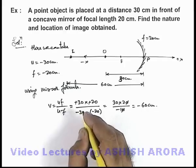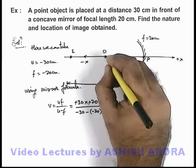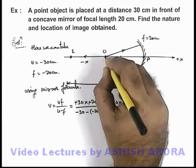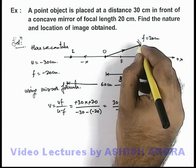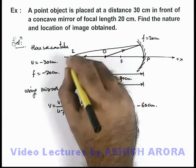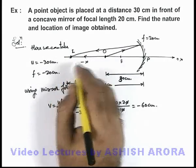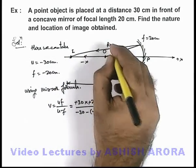If we wish to draw the ray diagram, all light rays which are incident on the mirror from object, after reflection these all rays are going to meet at the position of image. Here you can see that all reflected rays